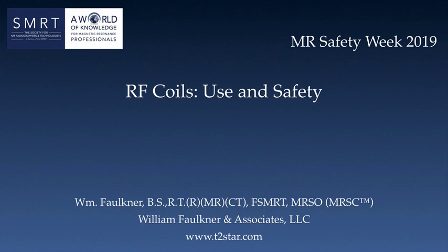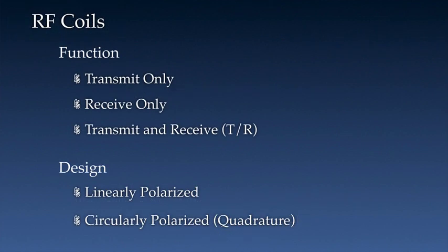RF coils differ in both their function and design. With regard to function, some coils only transmit RF, while others only receive. Some coils may be configured to both transmit and receive radio frequencies. The design of the coils is that they are either linearly polarized or circularly polarized, also known as quadrature.